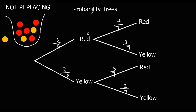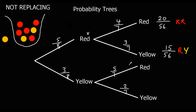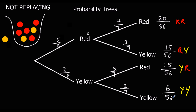So let's look at the combined events without replacement. Red then red is five times four, which is twenty, over eight times seven, fifty-six — twenty out of fifty-six. Red then yellow is five times three, fifteen, out of fifty-six. Yellow then red is three times five, fifteen, out of fifty-six. And yellow-yellow finally is three times two, six, out of eight times seven, fifty-six — six out of fifty-six. These add up to a whole: twenty plus fifteen plus fifteen plus six is fifty-six out of fifty-six — that's everything that could happen.